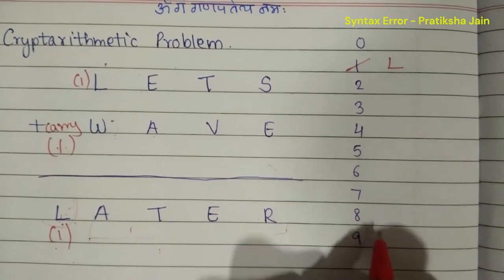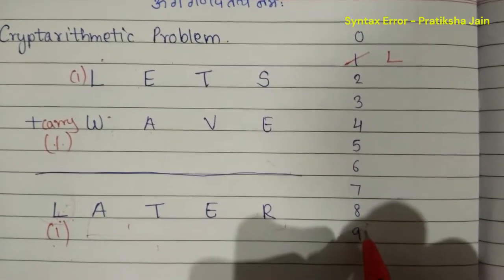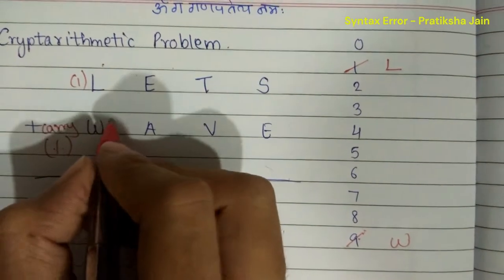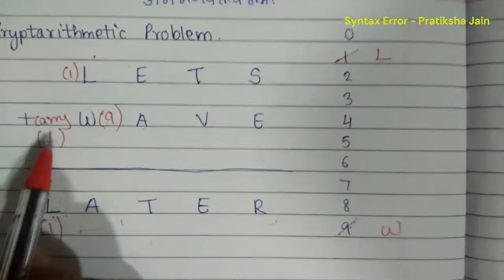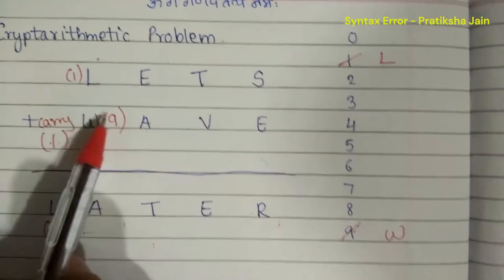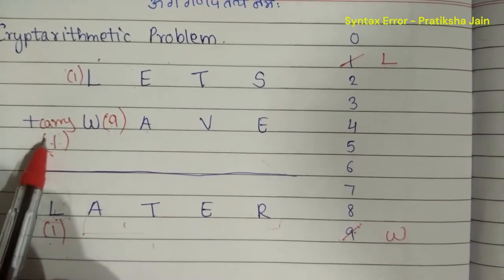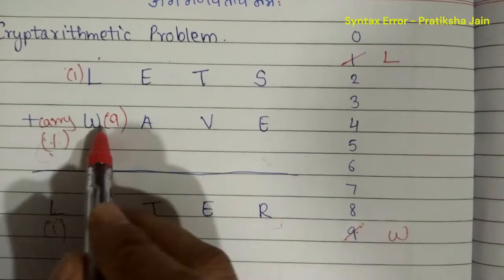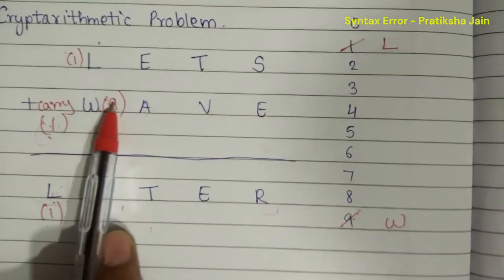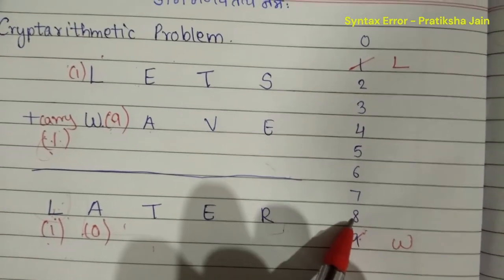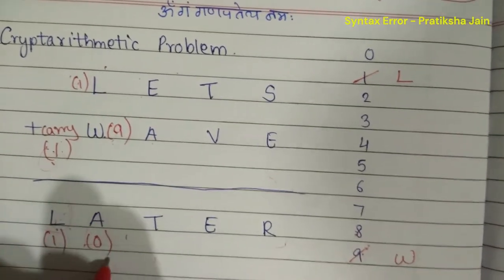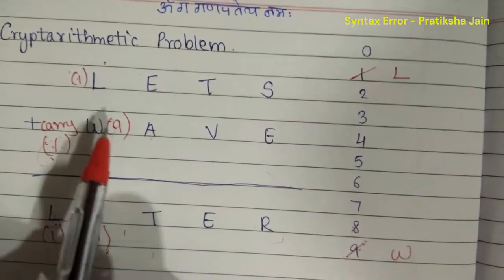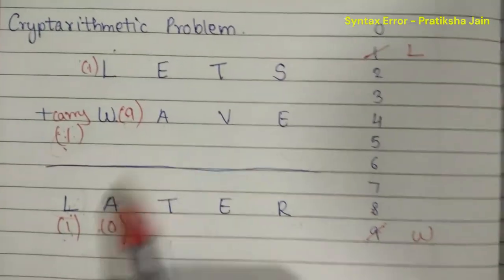The highest number should always be assigned first. So let's assign nine to W, so W becomes nine. As we want a carry here, nine plus one gives you ten — one and zero. So yes, we are going correctly. If we had taken eight, then eight plus one gives nine — there would be no carry. This is the second reason why we take the highest number.